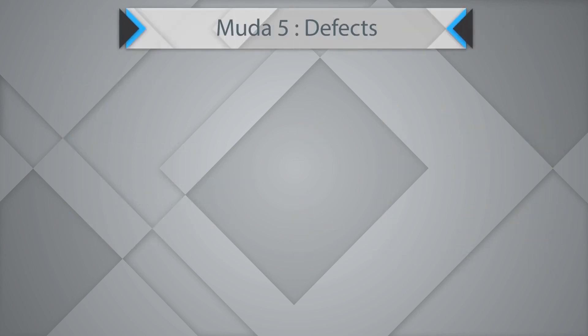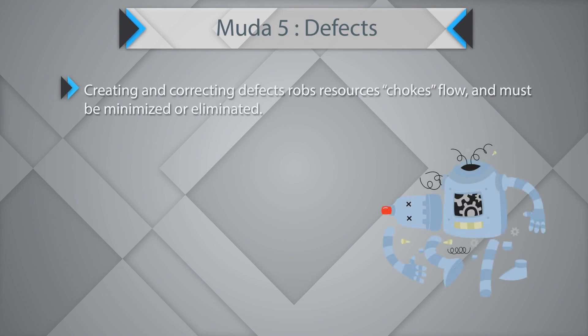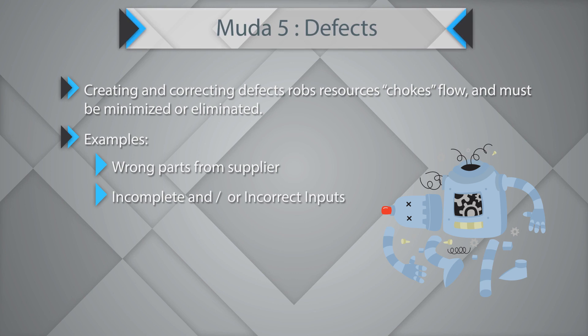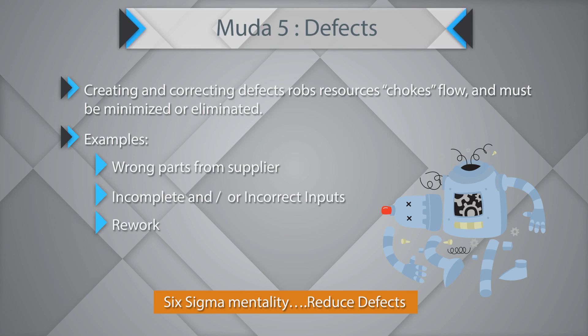The fifth Muda is defects. Creating or correcting defects robs resources, chokes the flow, and must be minimized or eliminated. Examples include wrong parts received from suppliers, incomplete or incorrect inputs, and lots of rework. You will need to develop the Six Sigma mentality of working at reducing defects.